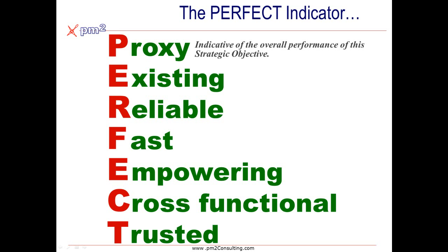More importantly, it's existing — the data is already collected and available. Edward de Bono describes information as the same data but in a new context. Using something like absenteeism allows us to use existing data to tell us new information.